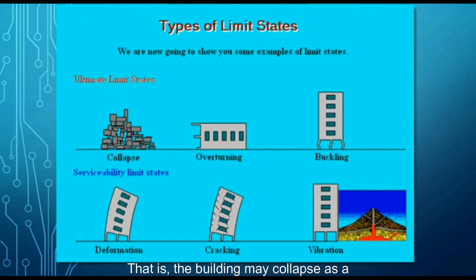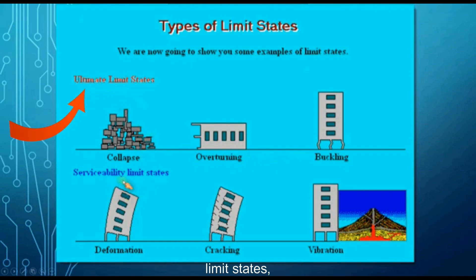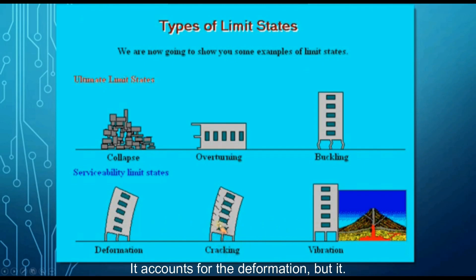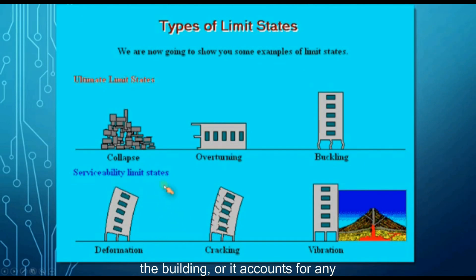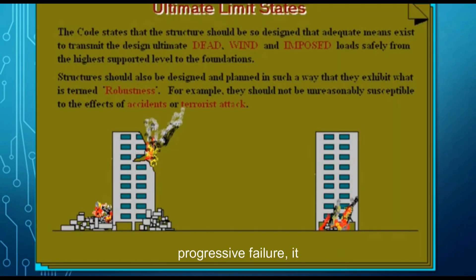The ultimate limit state means the building may collapse as a result of failure of one or more elements, or there may be overturning or buckling, as we see in the three pictures in front of us. But there is something else called serviceability limit states, which affects the shape of the building. It accounts for deformation without collapse — due to vibration, cracking, or deflection. Deflection is one of these serviceability types.